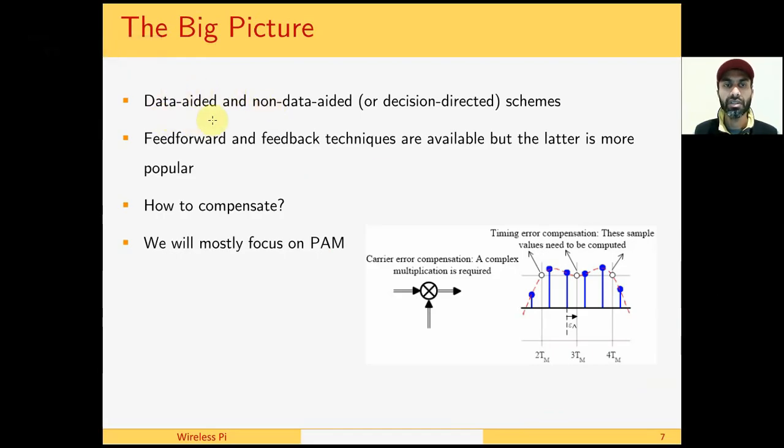We can utilize data-aided techniques in which known symbols are sent in the form of a training sequence, or non-data-aided techniques in which the receiver has to blindly estimate the timing offset from unknown modulation symbols. Feed-forward methods produce a one-shot timing estimate, while the feedback techniques seek help from a closed loop structure like a phase lock loop. In this context we call it a timing lock loop.